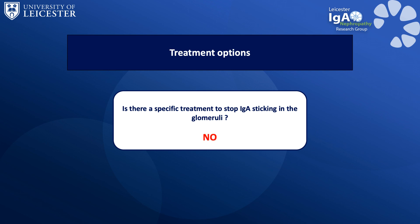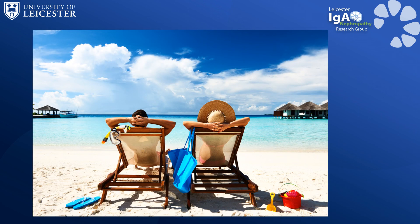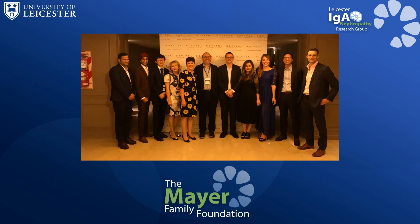Are there drugs that can specifically treat IgA nephropathy and stop IgA depositing within the fine filters of the kidney? The answer is no at the moment, but the outlook is particularly promising — we have a number of new treatments being tested in clinical trials that may well be able to turn off inflammation in the kidneys and turn off production of the IgA that causes damage. Hopefully we will start to get results from these trials towards the end of this year and the beginning of next year. The future in IgA nephropathy is looking very promising for new therapies, both for patients with IgA nephropathy in their own kidneys and for those who may suffer from recurrent disease in their kidney transplant. Thanks for listening — I look forward to hearing your questions later in the patient day.